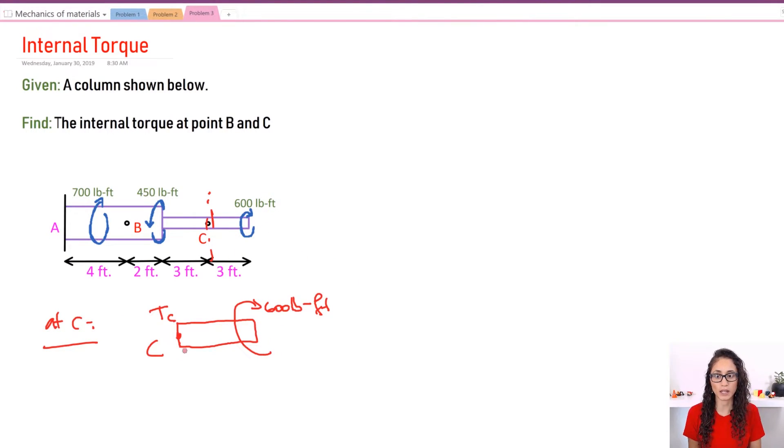So if this is going this way, I'm going to need 600 going this way. So TC is equal to 600 pounds-foot but the direction it's going to go this way. So that's TC. Very easy, straightforward.